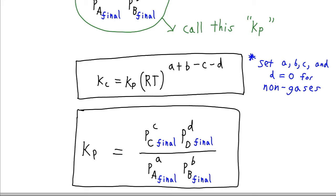Now note here, that since Kp refers to gases, that if we have something that's not a gas, it's not going to appear in our Kp expression. So these coefficients here are going to be equal to zero, whenever we have a liquid or solid or something aqueous there.